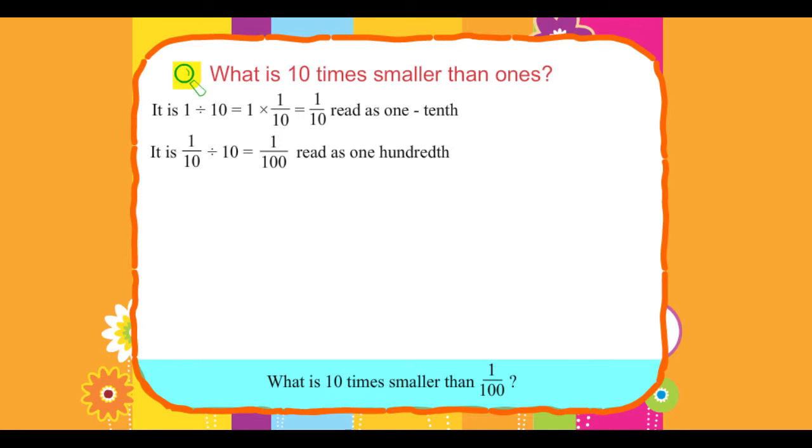What is 10 times smaller than 1 upon 100? It is 1 upon 100 divided by 10 equals 1 upon 1000, read as one thousandth.